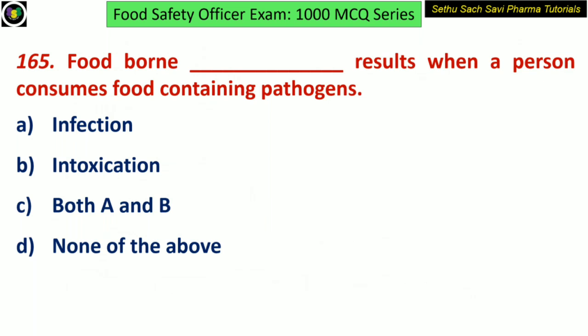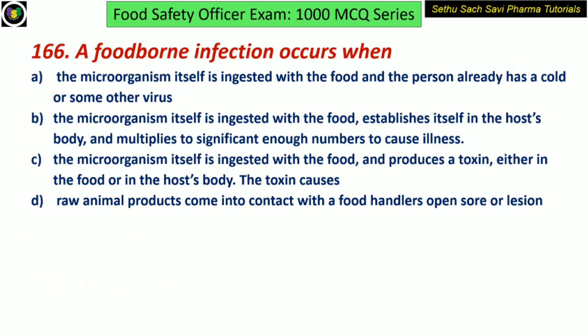Food-borne illness results when a person consumes food containing a pathogen — is it infection, intoxication, both A and B, or none of these? Yes, the answer is infection. A food-borne infection occurs when the microorganism itself is ingested with the food, establishes itself in the host body, and multiplies to a significant enough number which can cause illness.